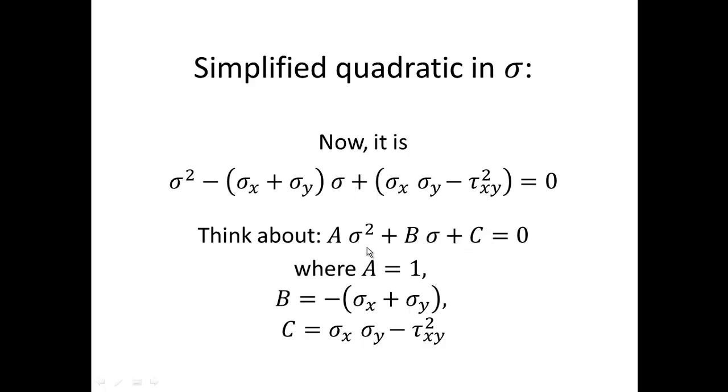Now think about your Algebra 2 in 10th grade, where you solved an equation ax squared plus bx plus c equals zero, so we know what the solution to that kind of equation would be. This case, a is one, b is minus sigma x plus sigma y, and c is sigma x sigma y minus tau xy squared.